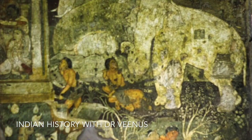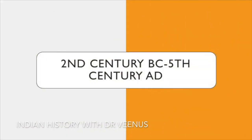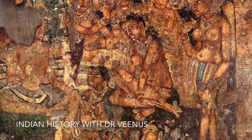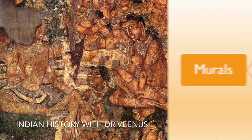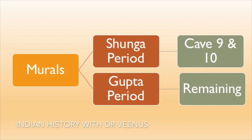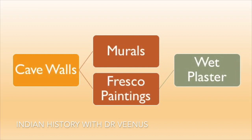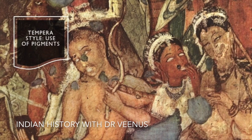Ajanta Caves contain some of the oldest surviving murals of the Indian subcontinent, carved between the 2nd century BC and 5th century AD out of volcanic rocks. They consist of 29 caves carved in a horseshoe shape. Murals in caves 9 and 10 belong to the Shunga period while the rest belong to the Gupta period. The most recent caves are 1 and 2. The walls have both murals and fresco paintings on wet plaster, using the tempera style with pigments.